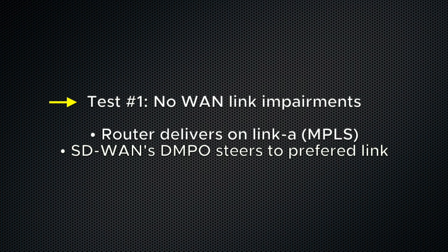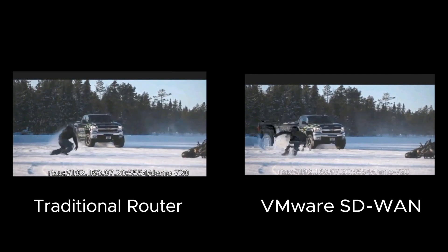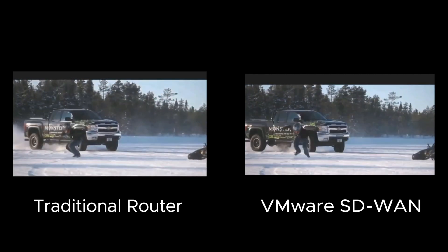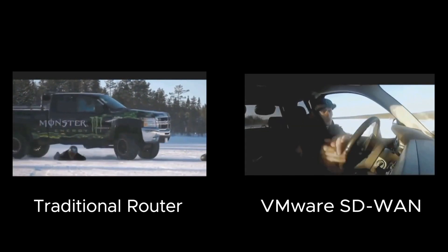For the first test, we'll have no WAN link impairments. In both scenarios, both WAN links are healthy just to set baseline expectations. The traditional router will deliver the traffic over the primary link A, typically an MPLS circuit. In the case of VMware SD-WAN, DMPO will also deliver the traffic on link A because of a business policy where high priority video traffic is preferred to be taken over the MPLS link A. From the perspective of the end user on the client host where it matters most, the end result performance in both scenarios is as expected — no problems with delivery of the traffic. The overall quality of the video is good.